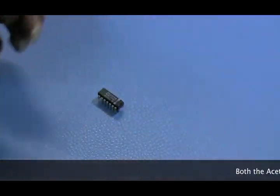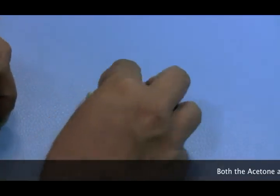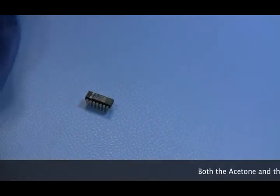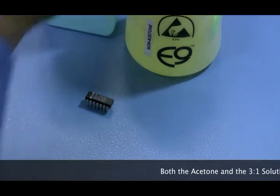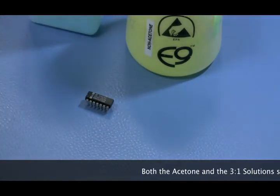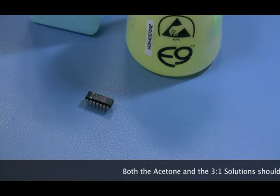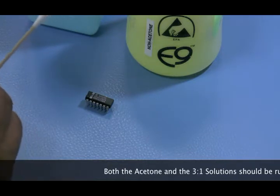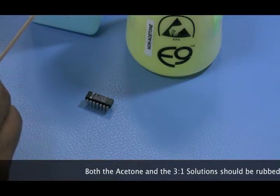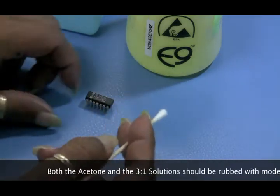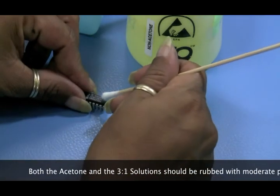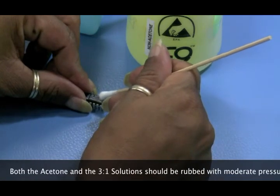Another part of the inspection process is surface and marking permanency tests. To do the marking permanency test we'll take a swab or Q-tip and dip it in a 3-in-1 solution of mineral spirits and alcohol. Then we will rub against the part marking to see if any of the markings are removed.